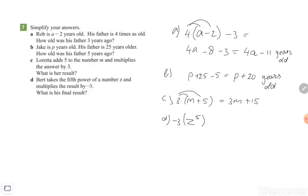What is the final result? Because you do z to the power of 5, it is just minus 3z to the power of 5. That's the final result, and those are the answers from exercise 7.